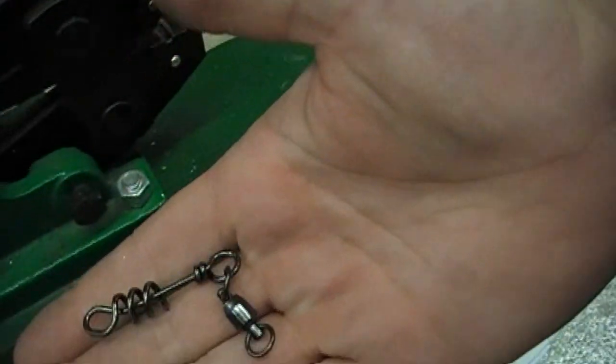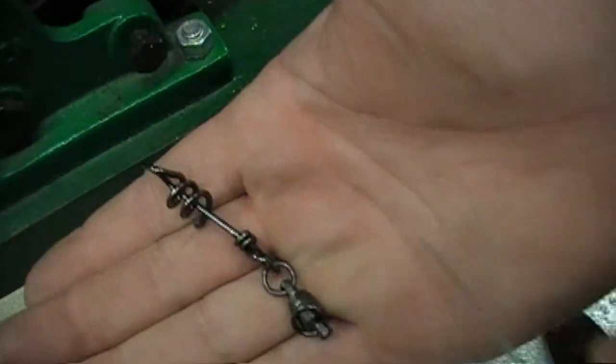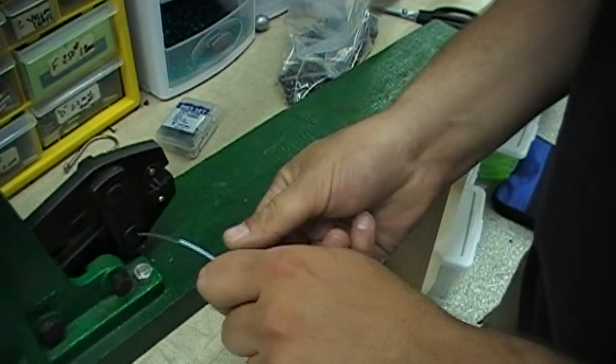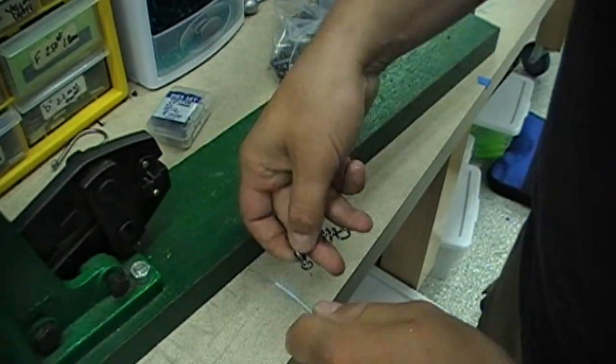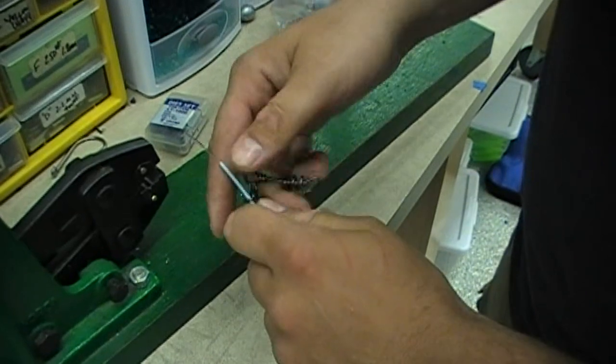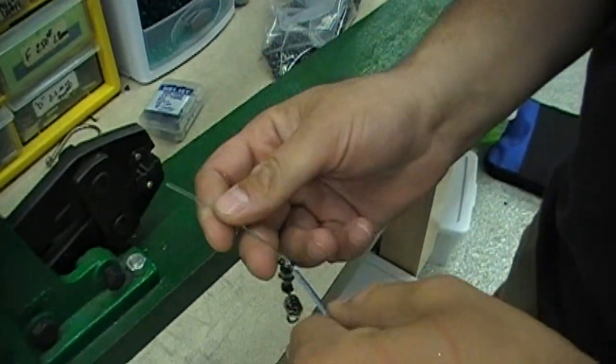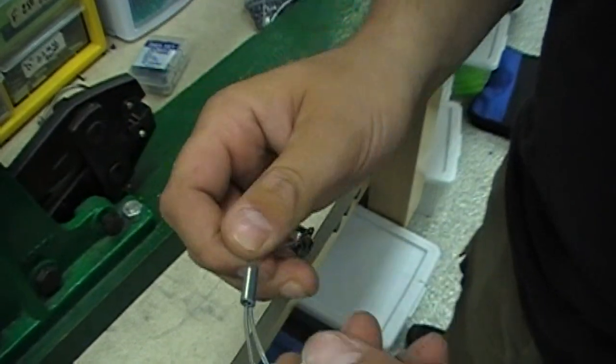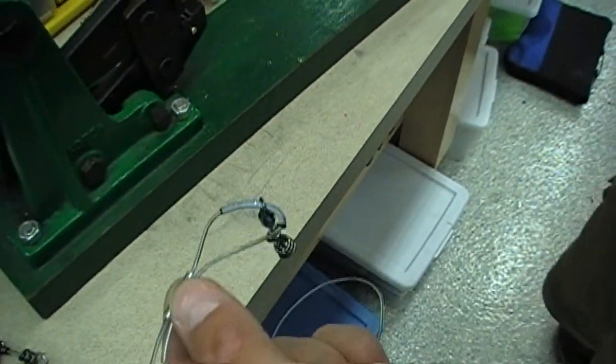Now over here we have our corkscrew swivel. It's 350 pound I believe. I'm just going to slip it on over the line. Now we're going to close up our crimp. Sticking the line back in the other side. And I'll show you how we'll finish that off.